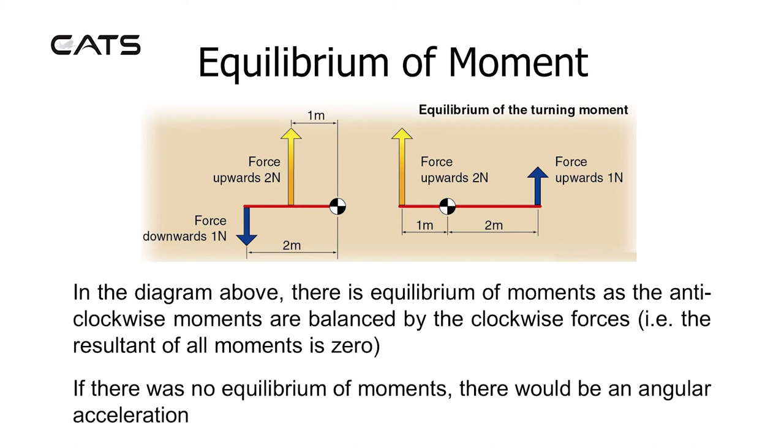Equilibrium of moment. In both diagrams, there is equilibrium of moments as the anti-clockwise moments are balanced by the clockwise forces, i.e. the resultant of all moments is zero. If there was no equilibrium of moments, there would be an angular acceleration.